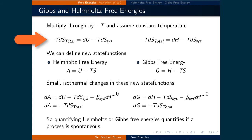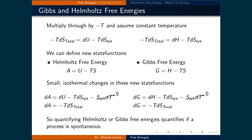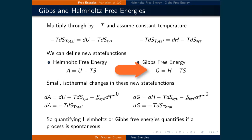In both cases, we will multiply through by negative T to get: negative T dS_total is equal to dU minus T dS_system for the constant volume process, and negative T dS_total is equal to dH minus T dS_system for the constant pressure process. At this point, we will define two new state functions. The Helmholtz free energy is defined as capital A, and it's equal to U minus TS. The Gibbs free energy is defined as capital G, and it's equal to H minus TS.